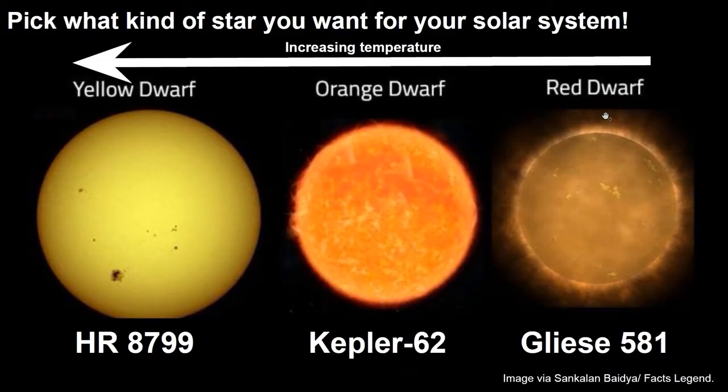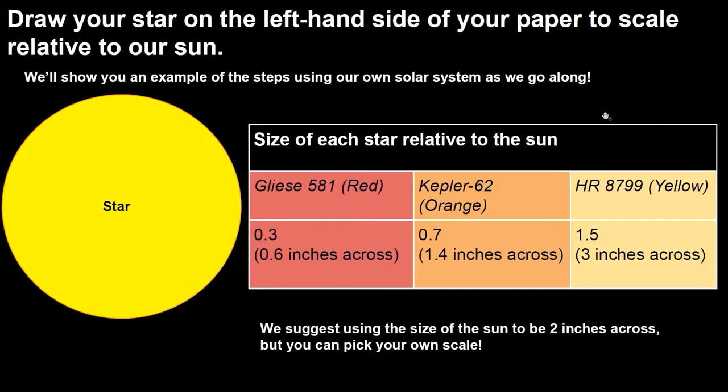Now that you've picked a star for your solar system, we're going to start by drawing our stars on the left side of the page. Use a scale on the table to know how big to draw your star. If you chose Gliese 581, your star should be 0.6 inches across. If you chose Kepler 62, your star should be 1.4 inches across. And if you chose HR 8799, your star should be 3 inches across. These values are based on the relative size compared to our sun.